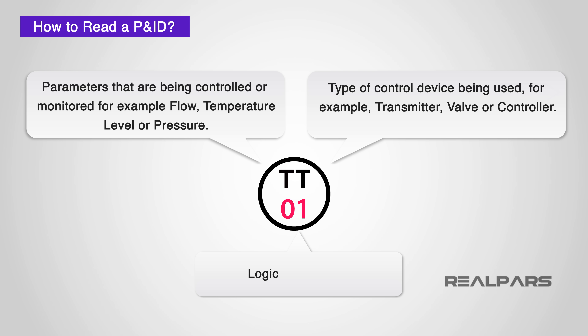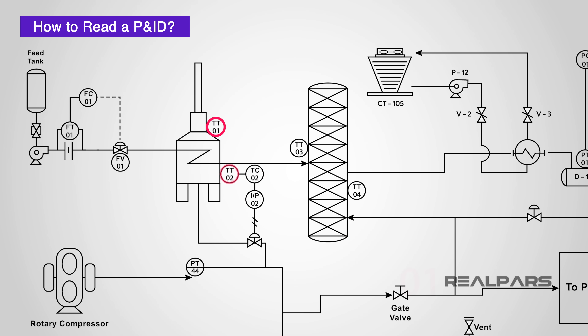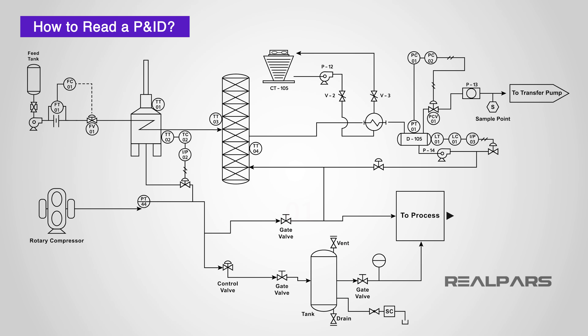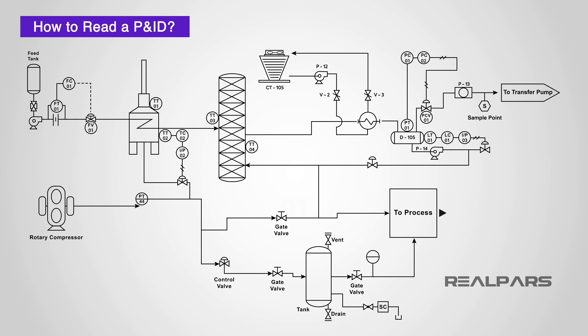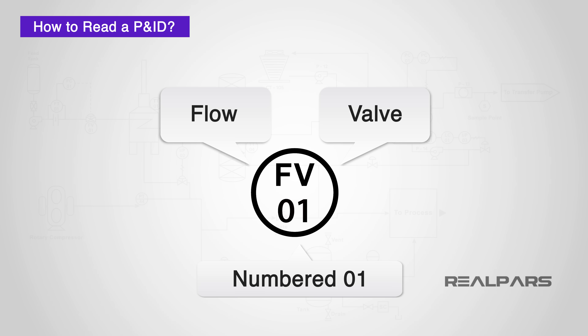The number refers to the logical numerator. For example, we may have a system with four temperature transmitters — it makes sense to identify these as TT01, TT02, TT03, and TT04. Consider an instrument on a P&ID named FV01. Looking up the code, we can tell this is a flow valve numbered 01.